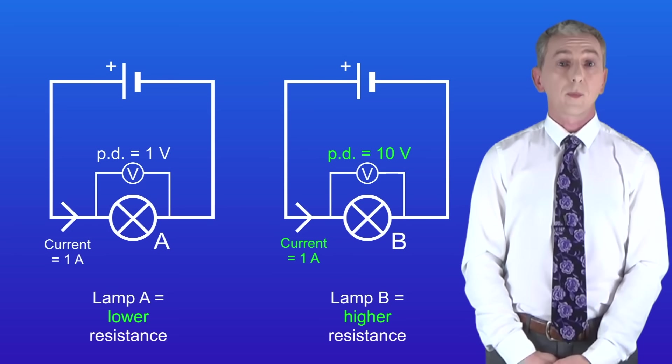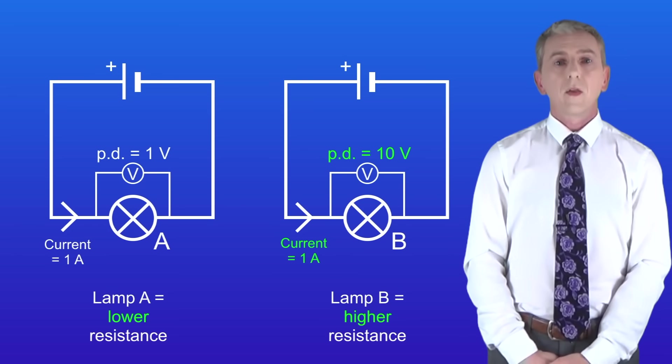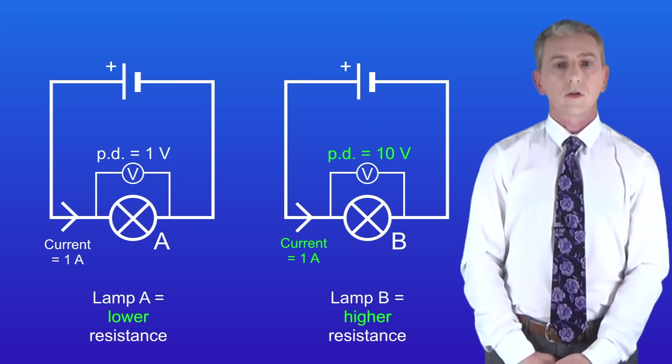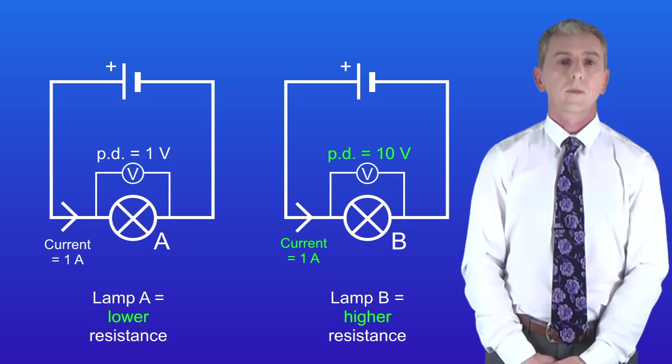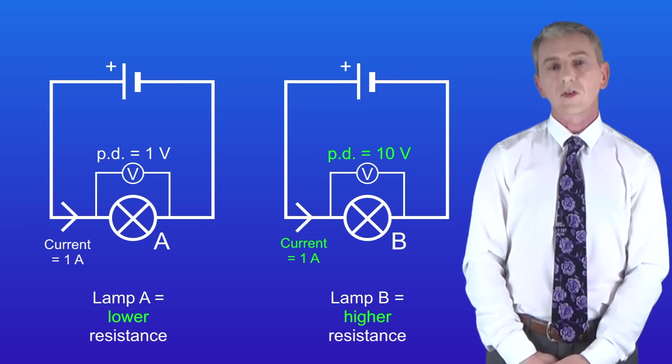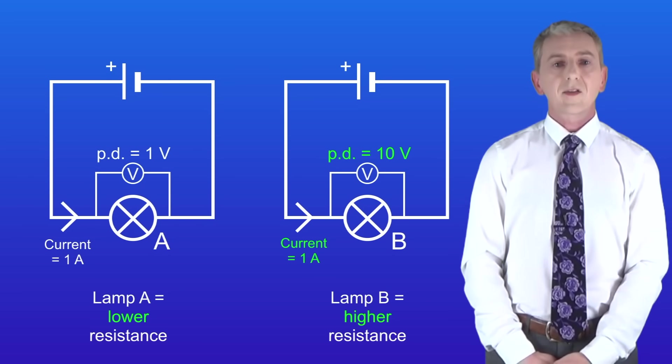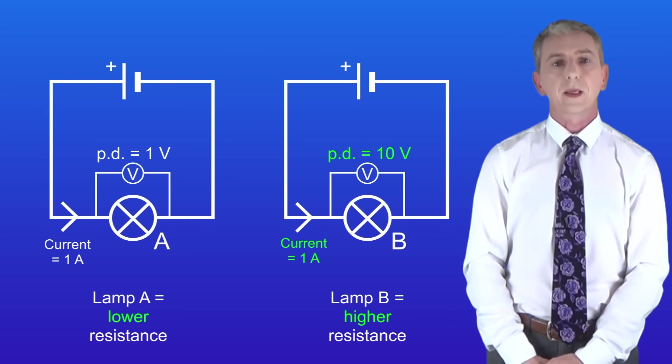In lamp B, the current is being driven by 10 volts. This means that a relatively large amount of energy is needed to drive the current through lamp B. Therefore lamp B has a higher resistance than lamp A. It simply takes more energy to drive the current through lamp B.